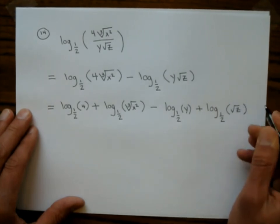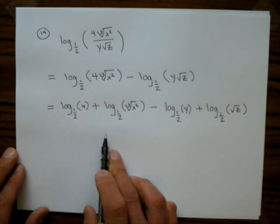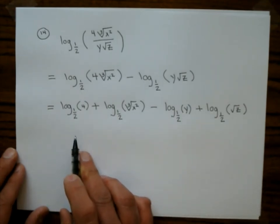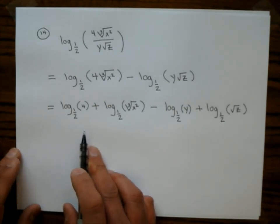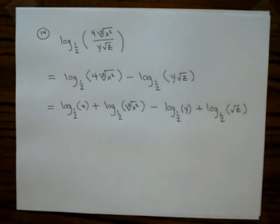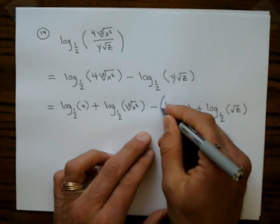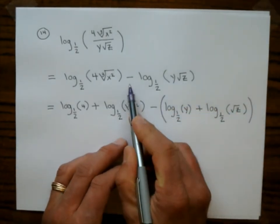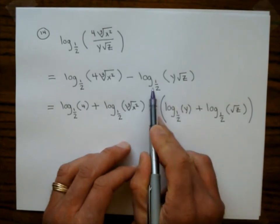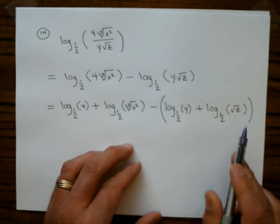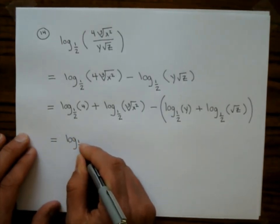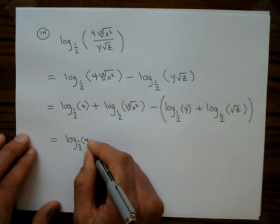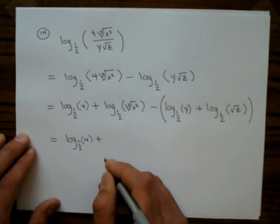Some of you might be noticing I did something wrong on purpose, because this is a common mistake on exams. Pause the video and try to figure out what's wrong. The fix is putting parentheses around the second group, because this is minus all of that — the subtraction distributes across the product rule terms.